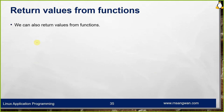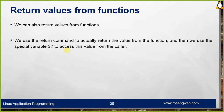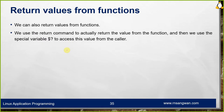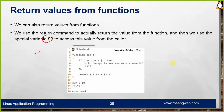To return values from functions, use the return command to return a value, then access it from the caller using the special variable $?. For example, a function that adds two parameters and returns the result — passing 5 and 10 should give $? equal to 15.